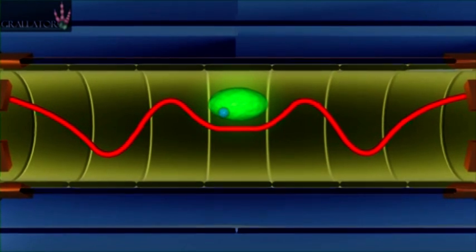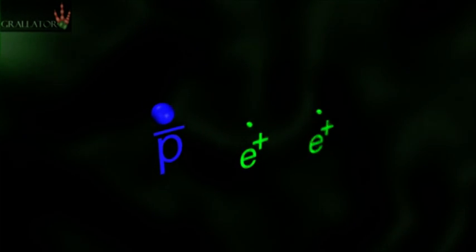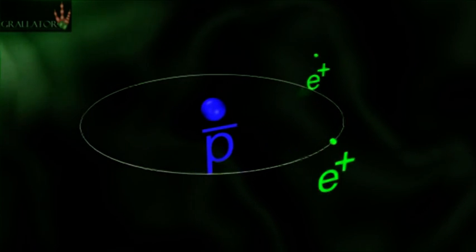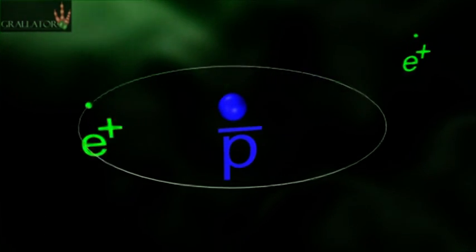What this experiment does now and the breakthrough here is to hold on to the antimatter. We have a magnetic bowl if you will, kind of a bottle that holds the neutral anti-hydrogen atoms.